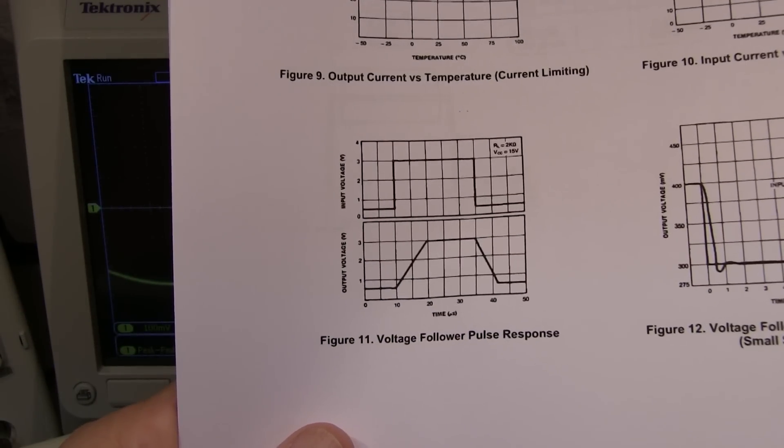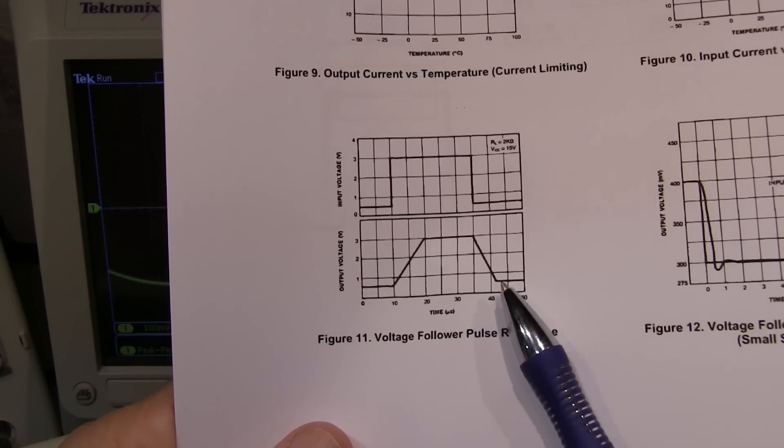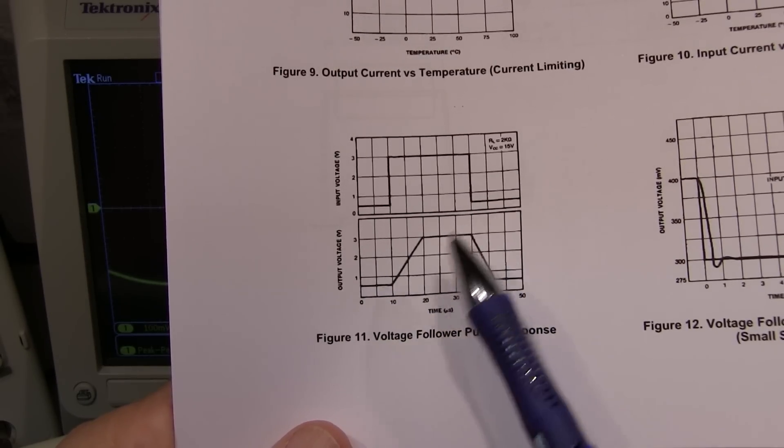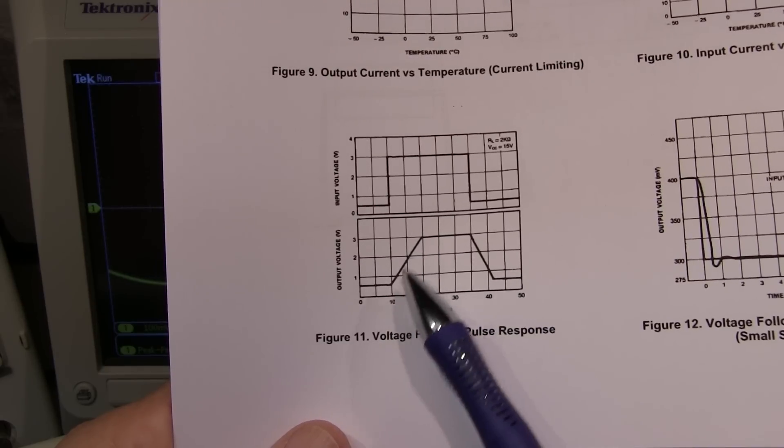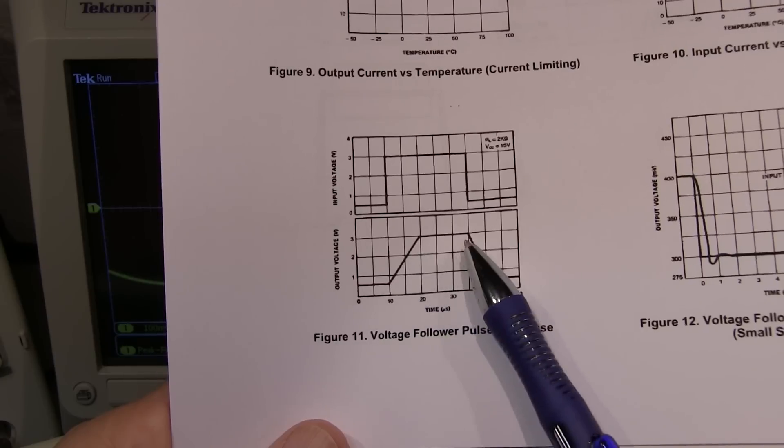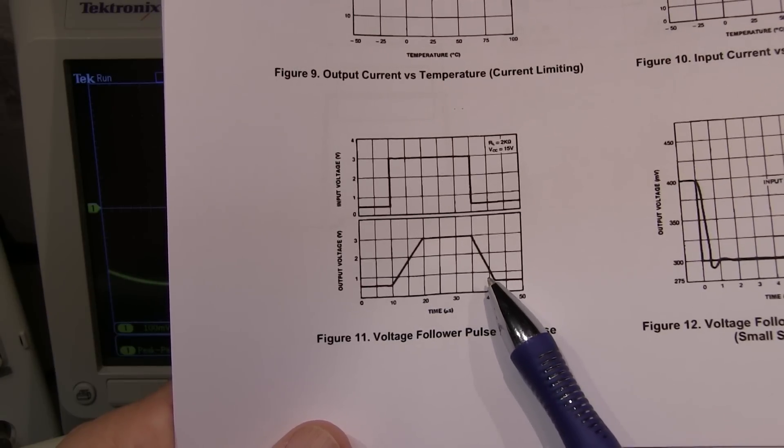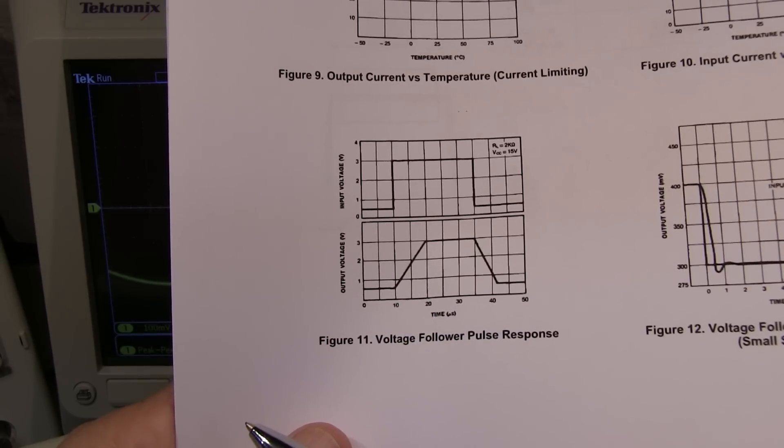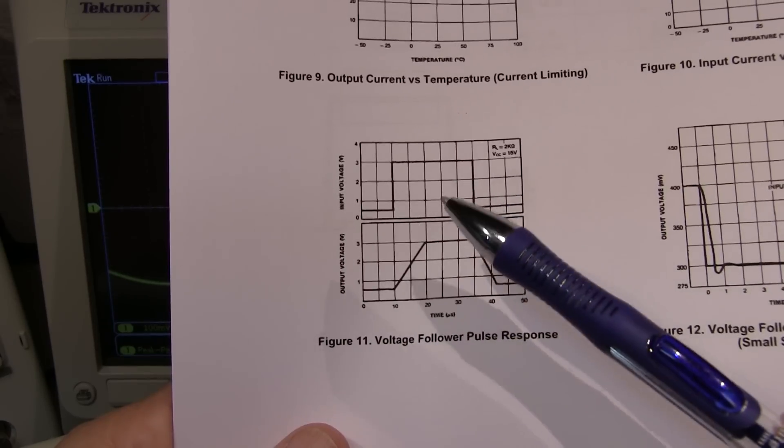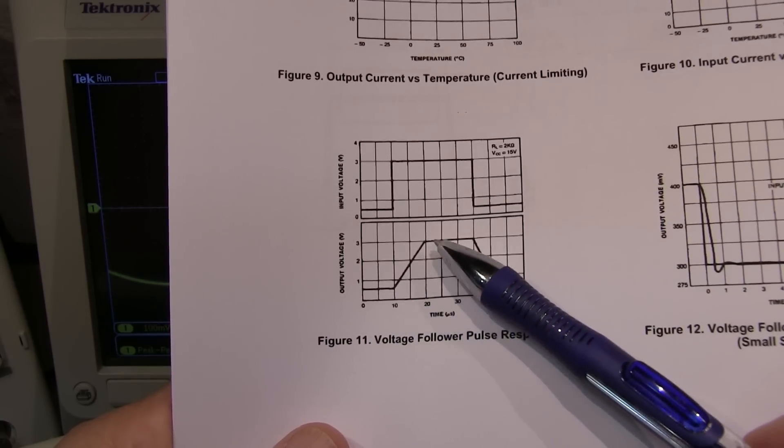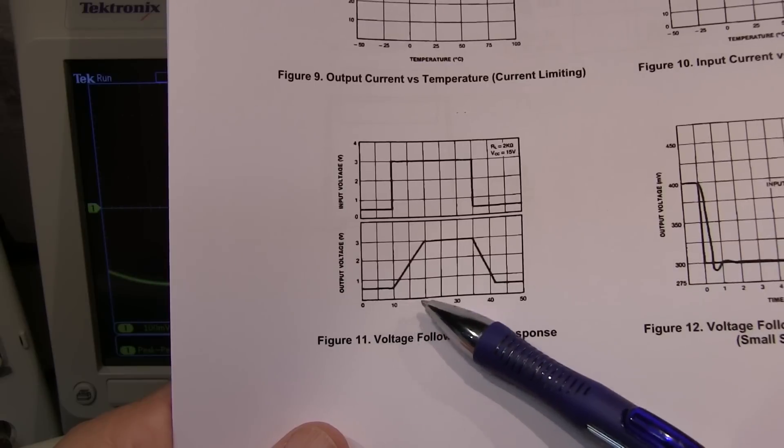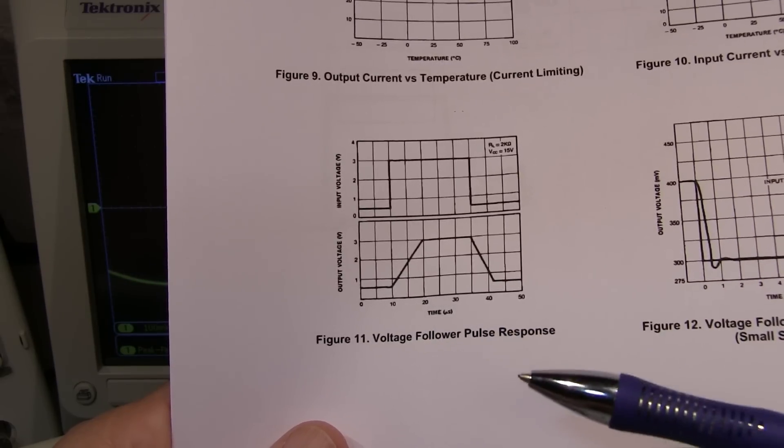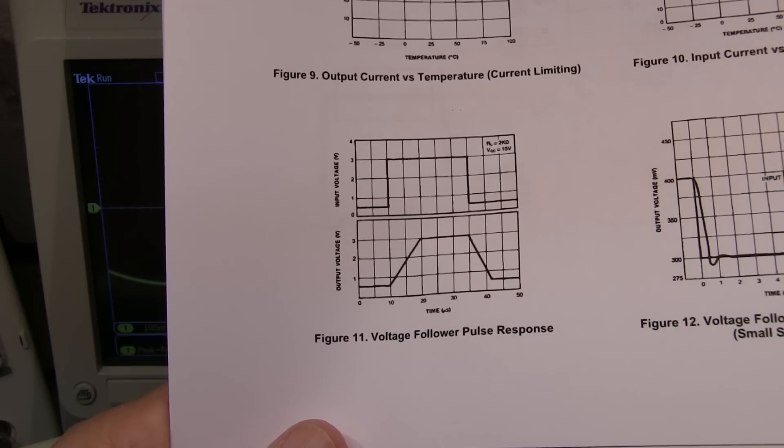Sometimes a slew rate is specified in the datasheet. Sometimes it's just shown in a graph like this for large signal pulse response. For a very fast input pulse here at unity gain, the output is going to be slew rate limited. And you'll also find sometimes that the slew rate for the rising edge and the falling edge won't be the same because there may be a different current available for charging or discharging that internal compensation capacitor. So in this particular datasheet for this LM358, this is showing about a two and a half volt rise over 10 microseconds. So that gives rise to about 0.25 volts per microsecond. That's oftentimes the way you'd see slew rate specified in terms of volts per microsecond.